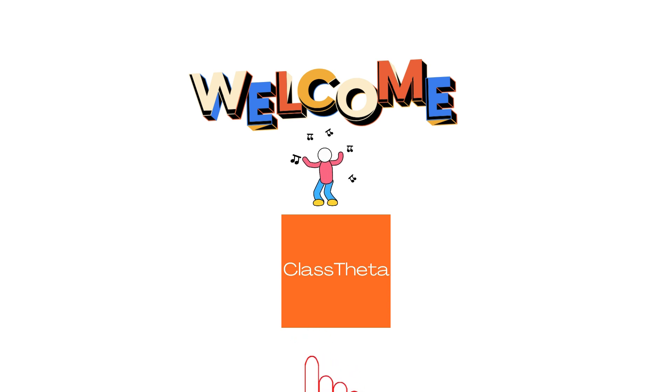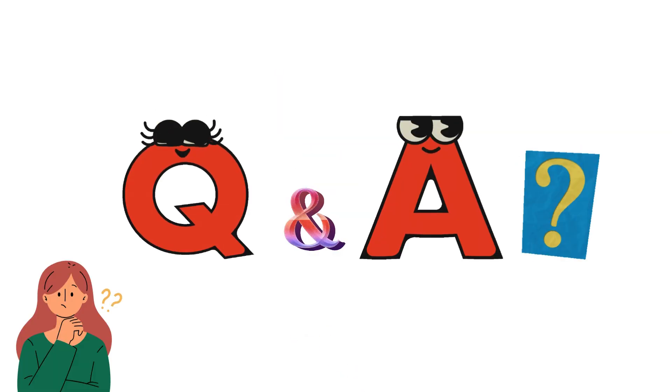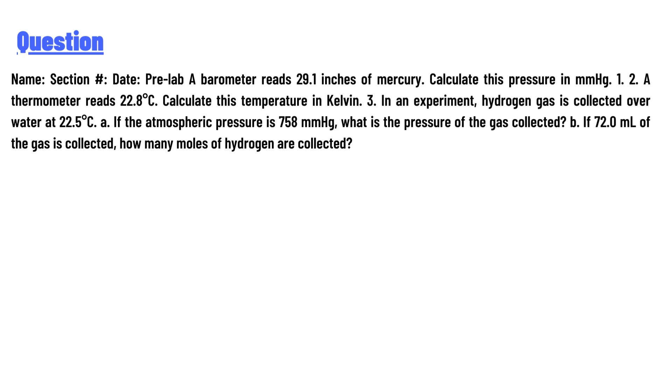Welcome to classtheater.com. Today's question: Name, Section, Date. Pre-lab Question 1: A barometer reads 29.1 inches of mercury. Calculate this pressure in mmHg. Question 2: A thermometer reads 22.8°C. Calculate this temperature in Kelvin.